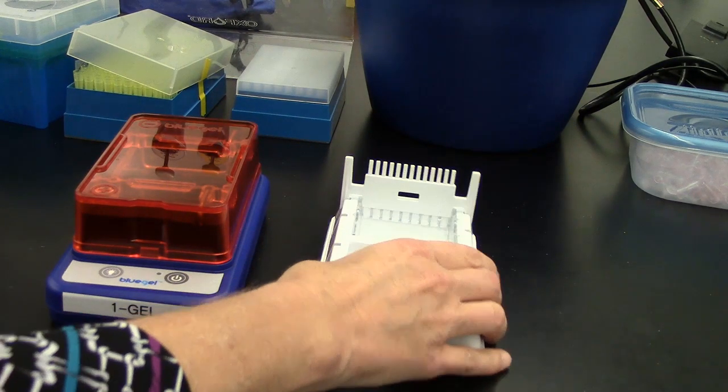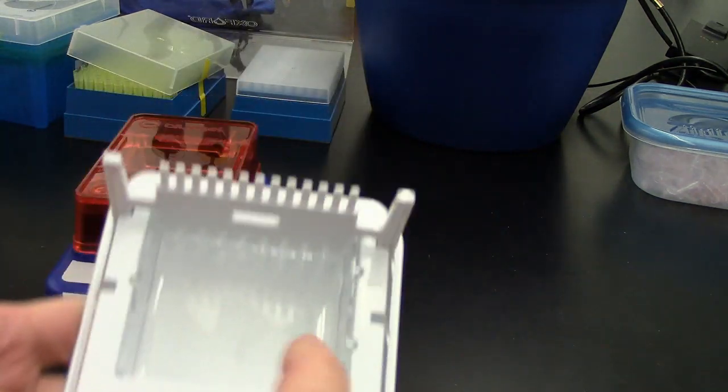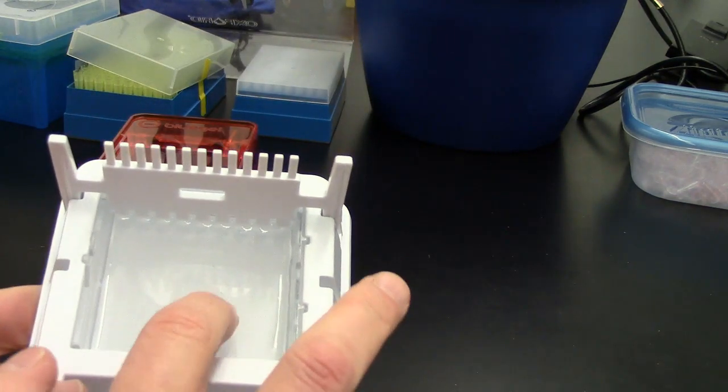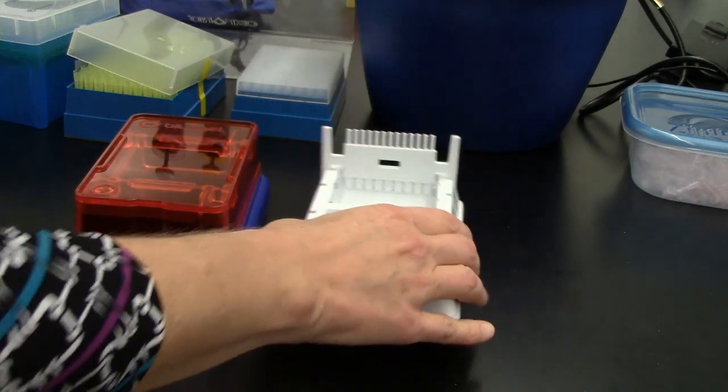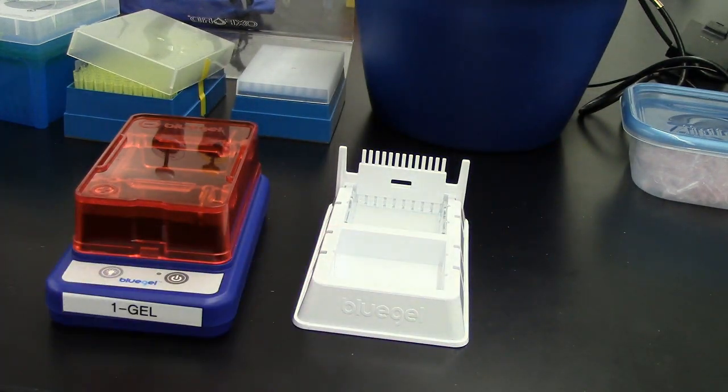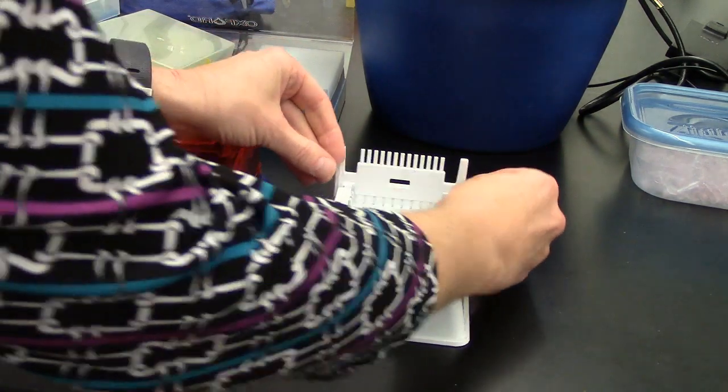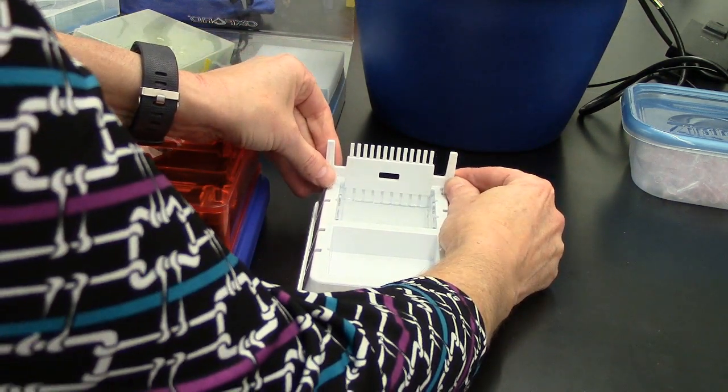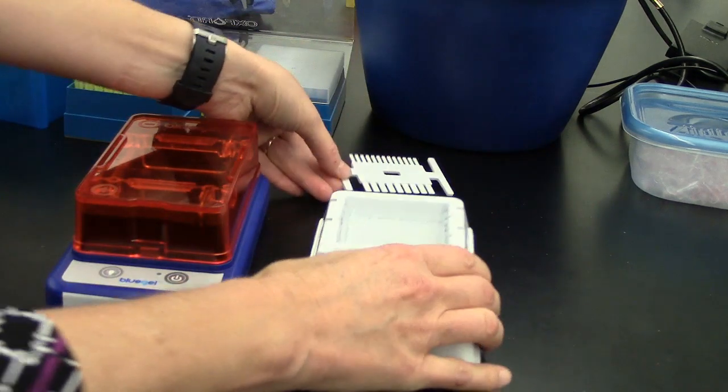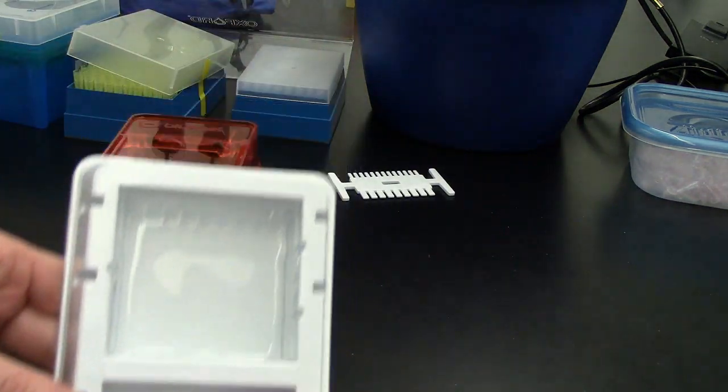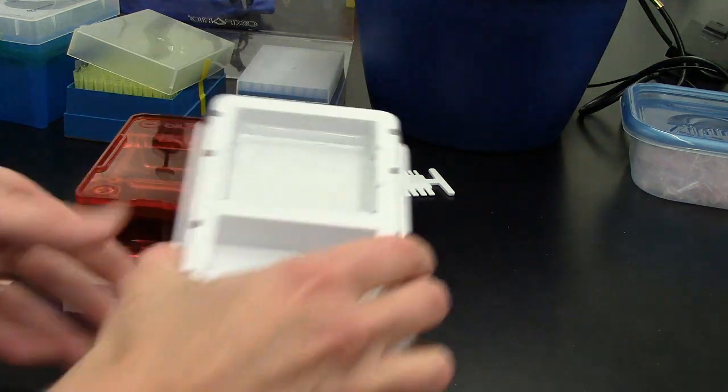Once your gel is solidified, it should feel nice and solid. We need to put it into the electrophoresis chamber. First, remove the comb by lifting straight up and remove the comb. You should see little wells where the comb used to be.